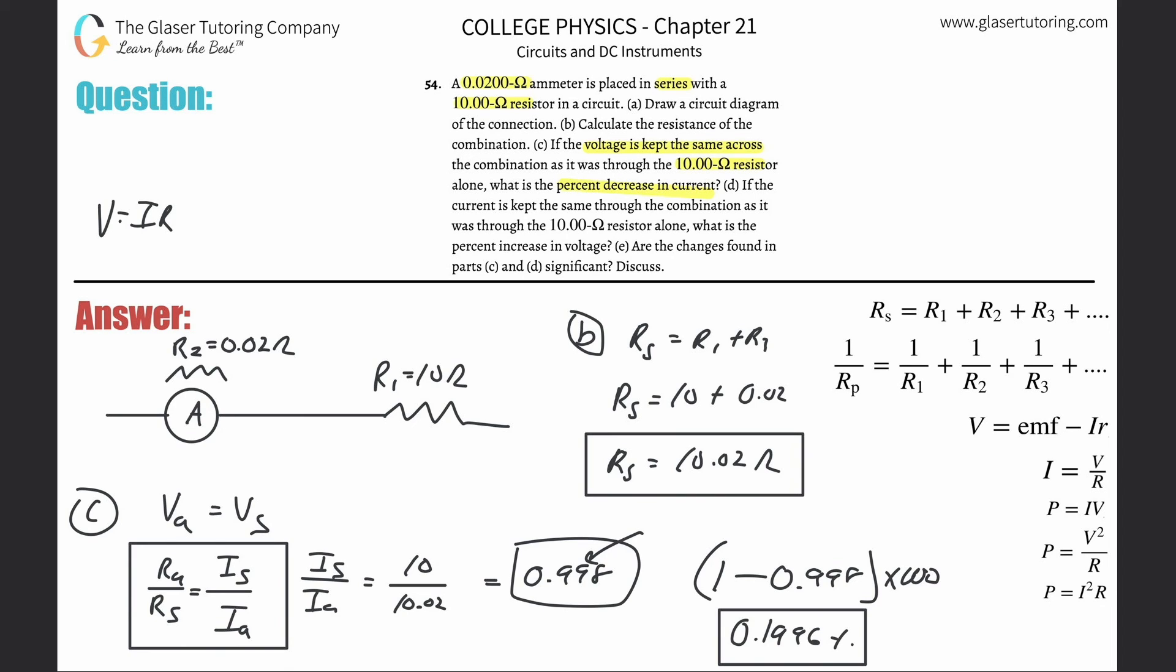Letter D: If the current is kept the same now, not the voltage anymore but the current is kept the same. So the current alone equals the current in series. Substitute in Ohm's law: the voltage alone divided by the resistance alone will equal the voltage in series divided by the resistance in series.